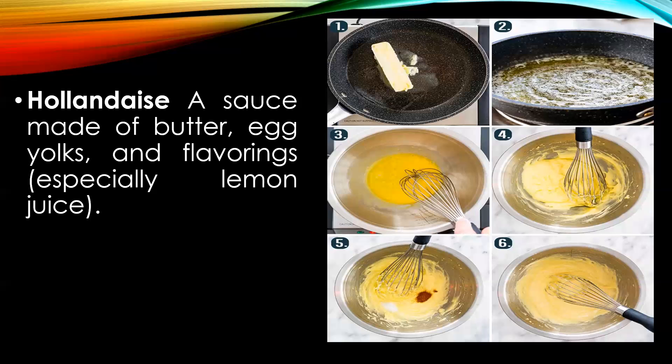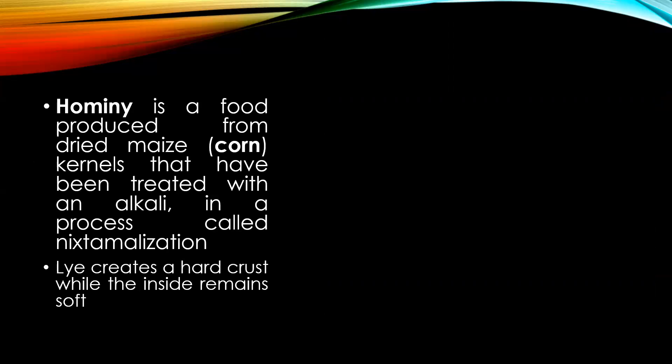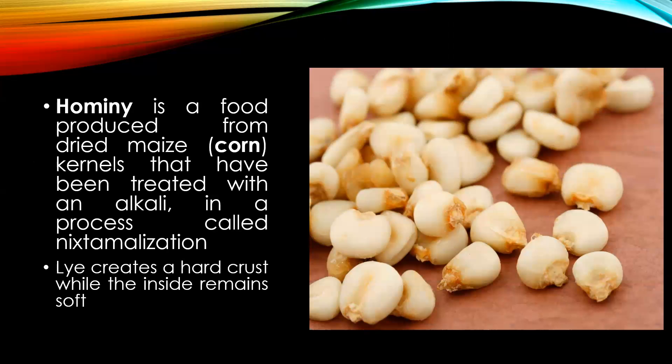The next term is hominy, a food produced from dried maize — that's corn — kernels that have been treated with an alkali in the process of nixtamalization. Lye creates a hard crust while the inside remains soft.